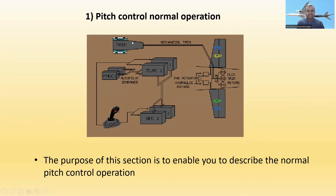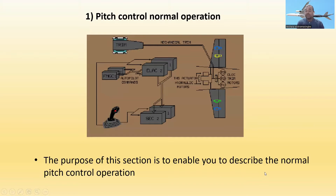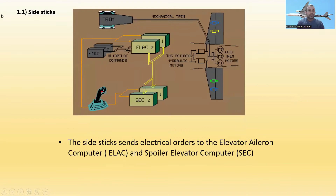The purpose of this section is to enable you to describe the normal pitch control operation. As you can see in the diagram, here is the trim wheel — it directly goes to the THS compartment. You can see the Flight Management Guidance Computer, ELAC — Elevator ELAC computers — there are two, ELAC 1 and ELAC 2 — and SECs, Spoiler Elevator Computers 1 and 2. Here are the sidesticks.